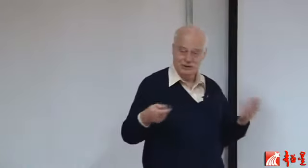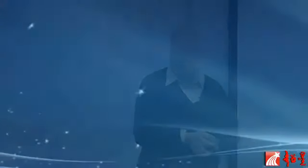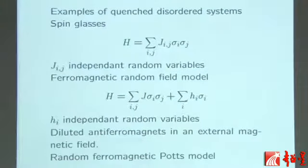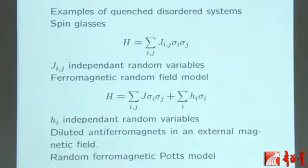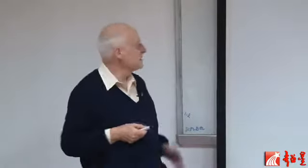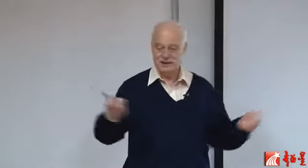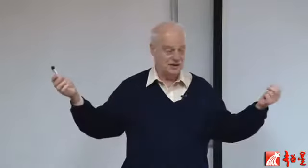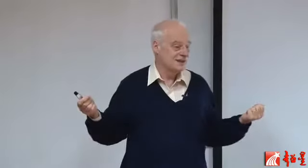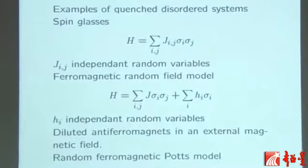We cannot model the randomness of the position directly. So the model is to consider a regular lattice, for example, and consider that the couplings — the nearest-neighbor couplings — are random variables. And we say it is quenched, because if you study a system, the interaction terms are fixed; they don't move in time, while the spins can flip.